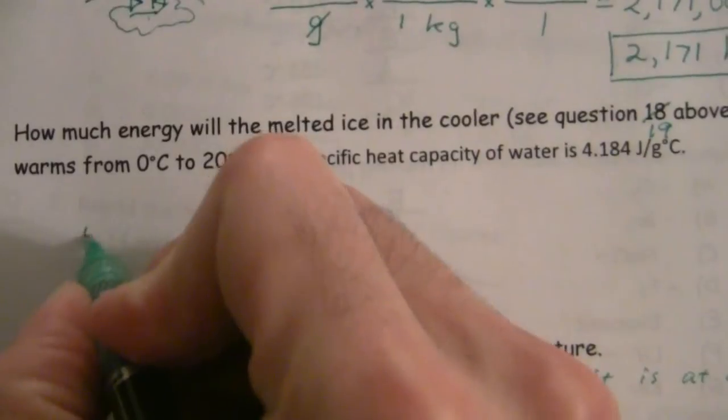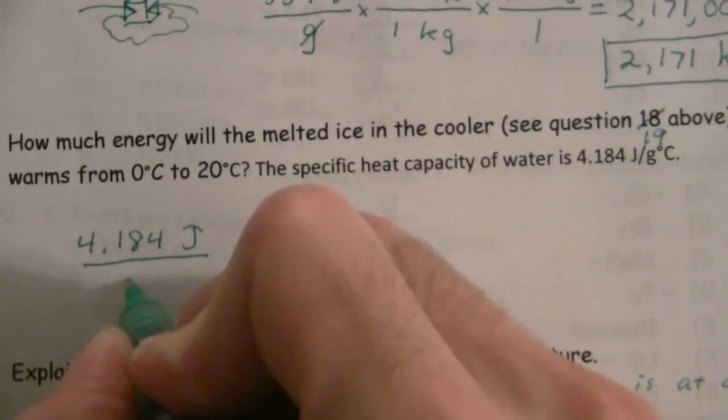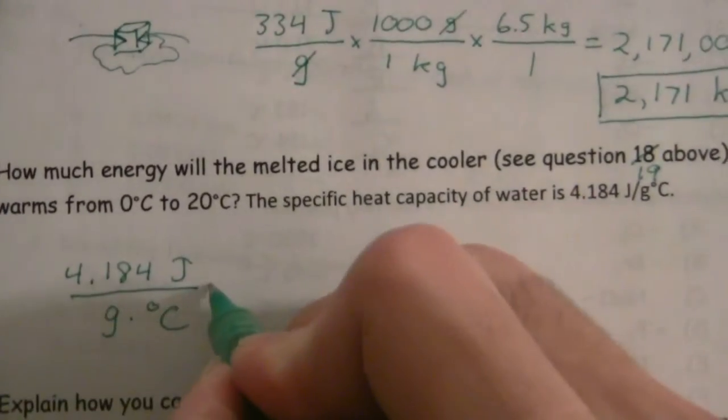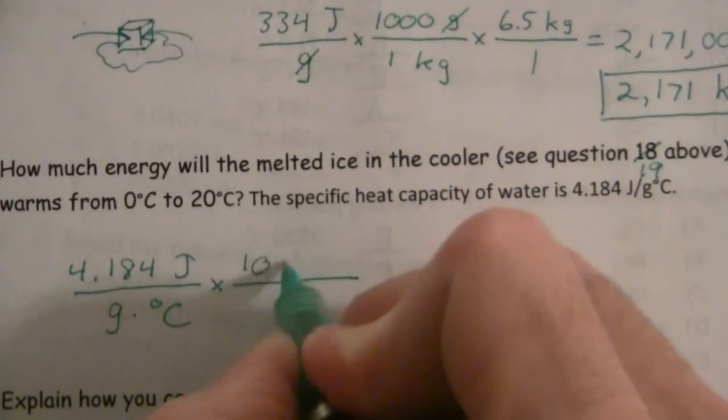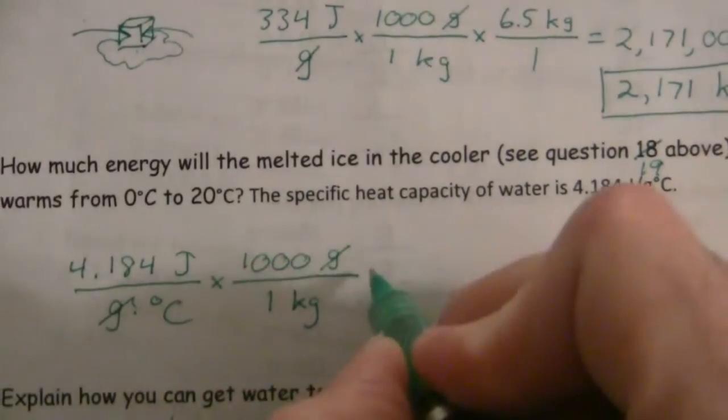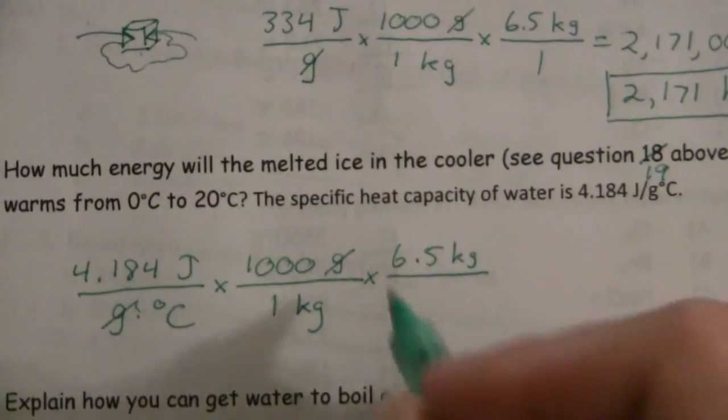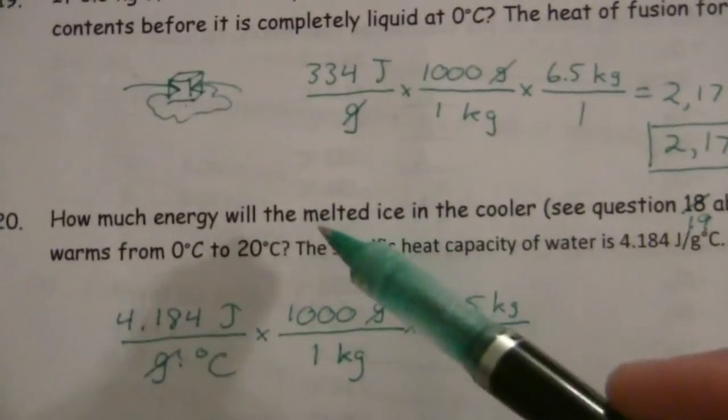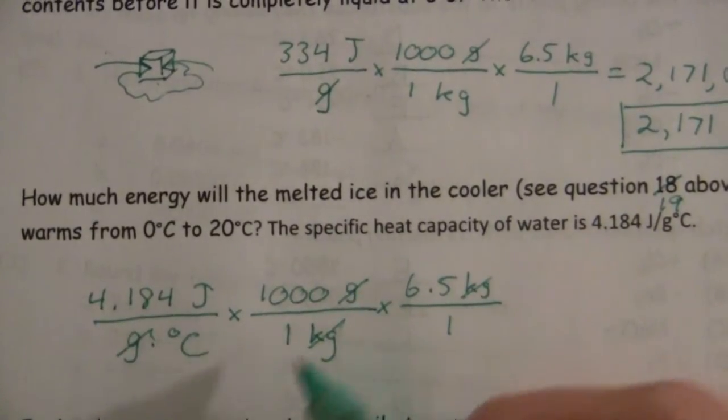So, to find the energy then, we just start with that. 4.184 joules per gram per degree C. And then, I can throw in my conversion here to go from grams to kilograms. And I do that because I have my value as 6.5 kilograms of the originally ice, which has melted, because it's the melted ice now. So that cancels my kilograms.